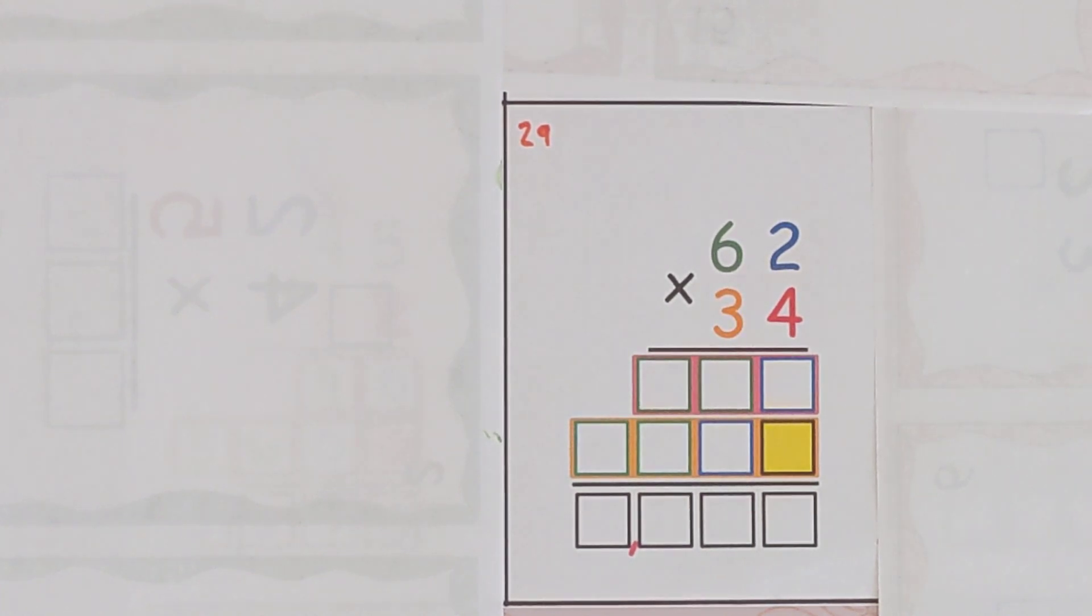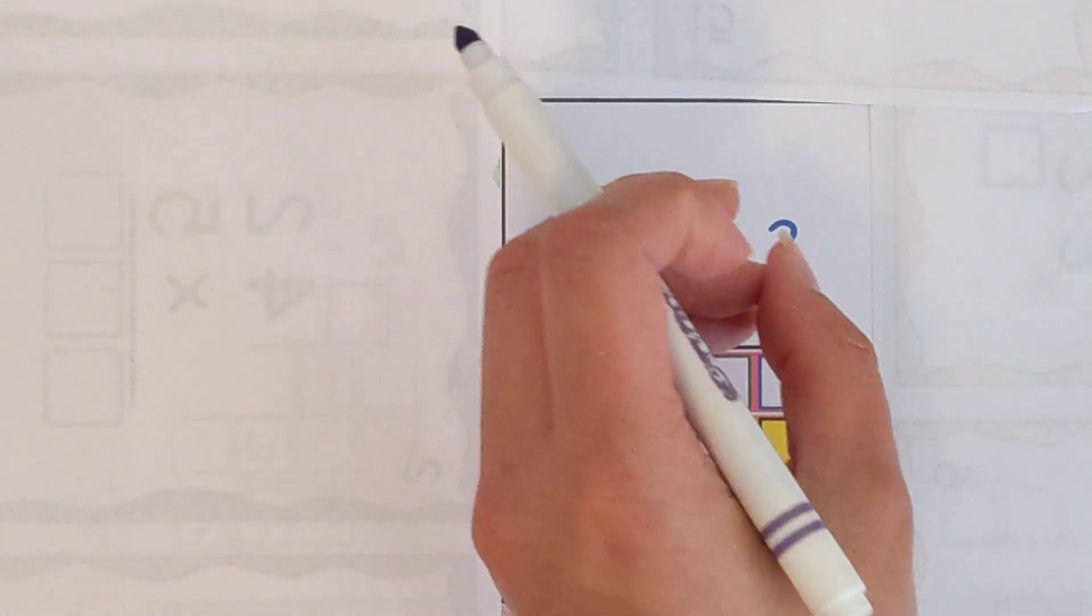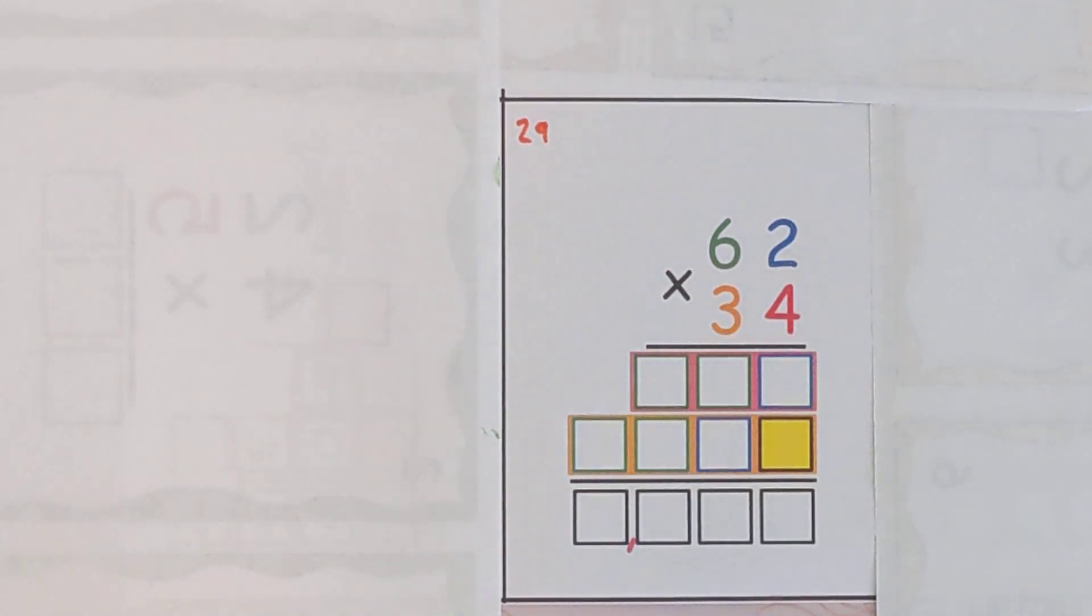Hello, we are doing 62 times 34. We're using the standard algorithm and I like to remember the six and the two came together and the three and the four came together so they're not going to fight against their own team.